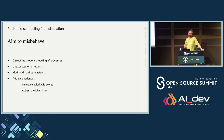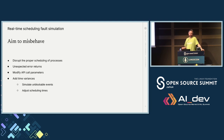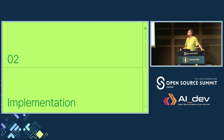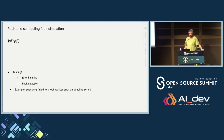Our aim here is to misbehave. How would we disrupt proper scheduling and processes? We'll go through things — the really easy stuff first: unexpected error returns, modifying API call parameters, and then ideas about adding time variances to the scheduling, such as possibly unblockable events or scheduling time adjustments. So — why would we do this? That's a good question.